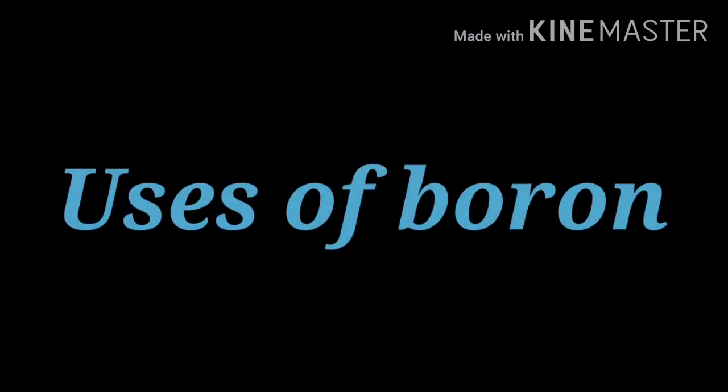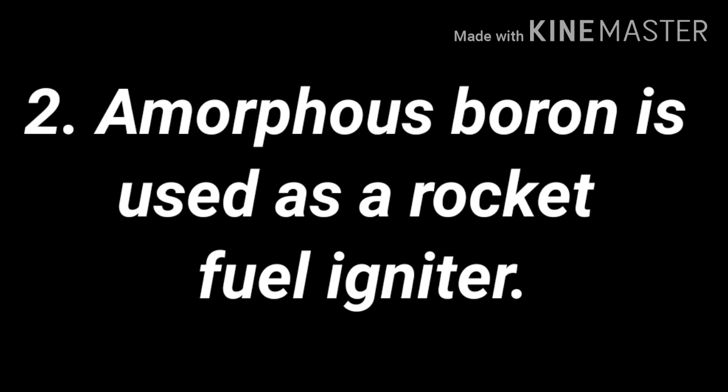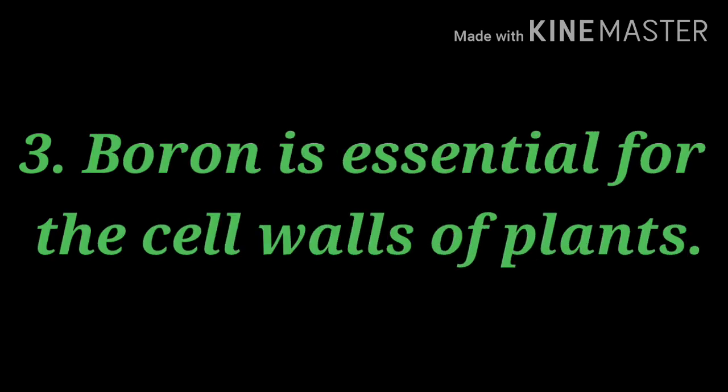Now we are going to see some uses of boron. First, boron has the capacity to absorb neutrons, so it is used as a moderator in nuclear reactors. Second, amorphous boron is used as a rocket fuel igniter — it can make fire. Third, boron is essential for the cell walls of plants, so each and every cell wall contains boron.